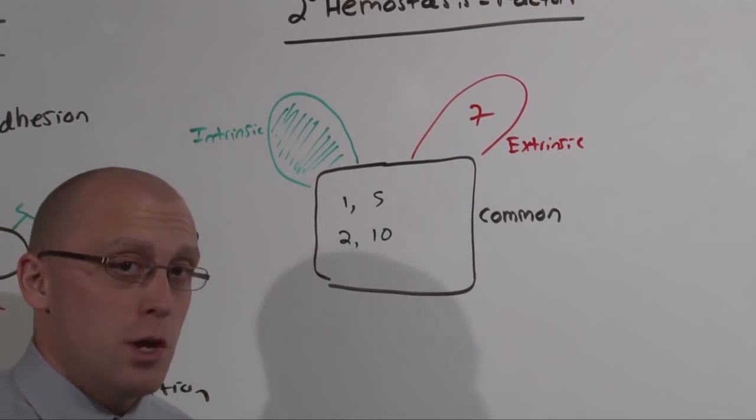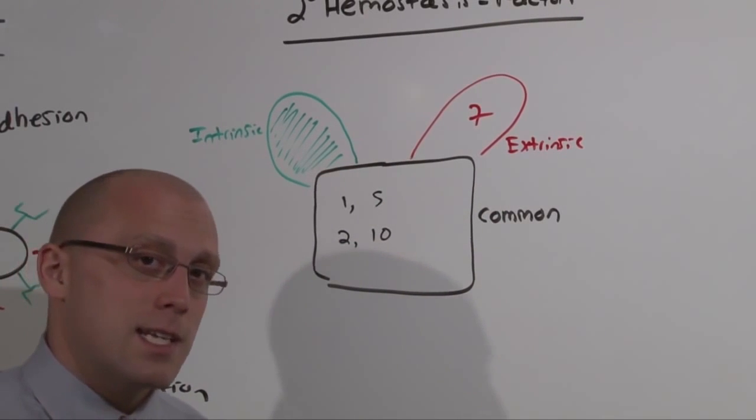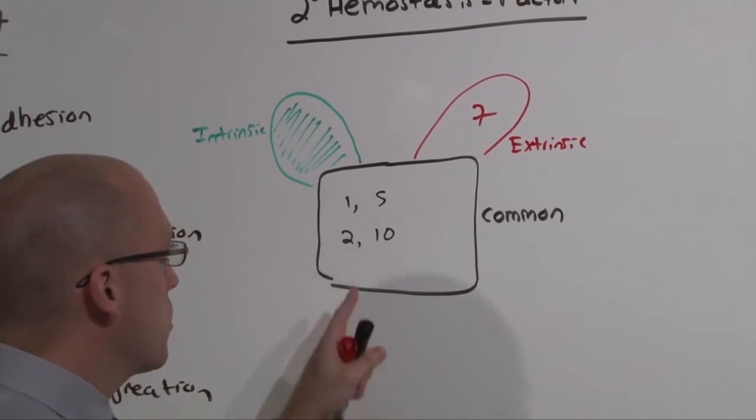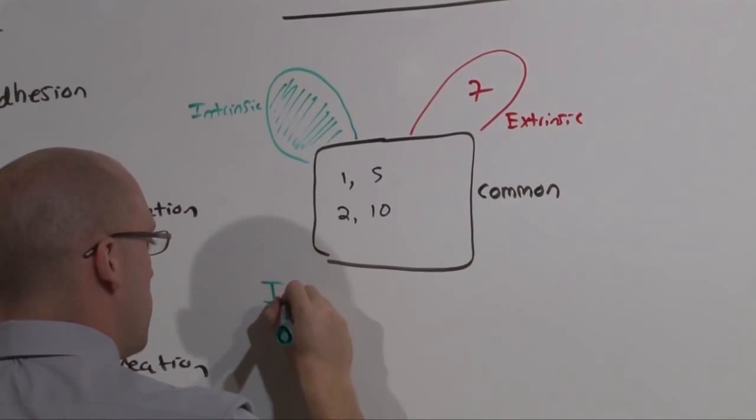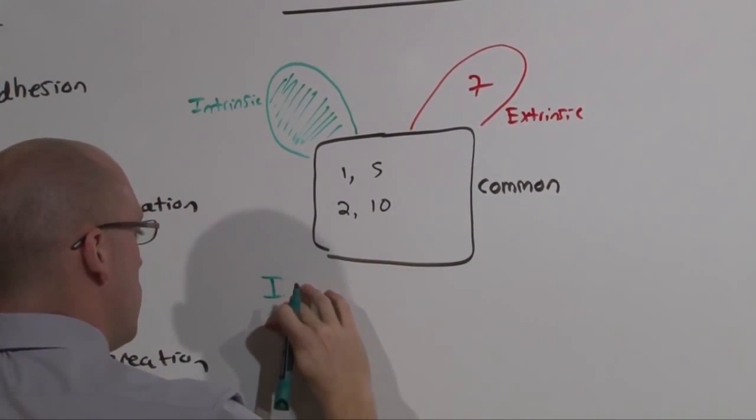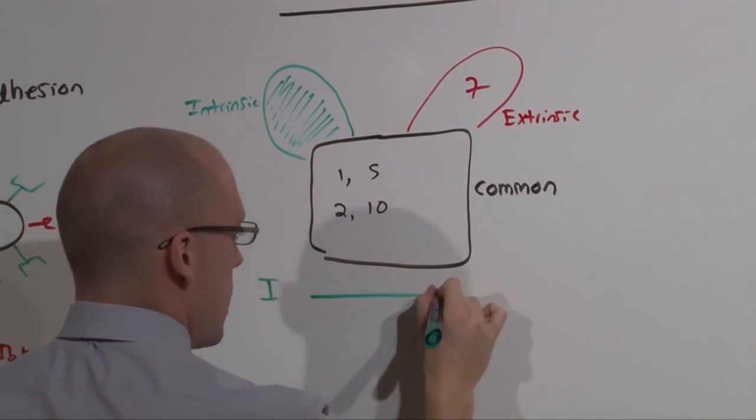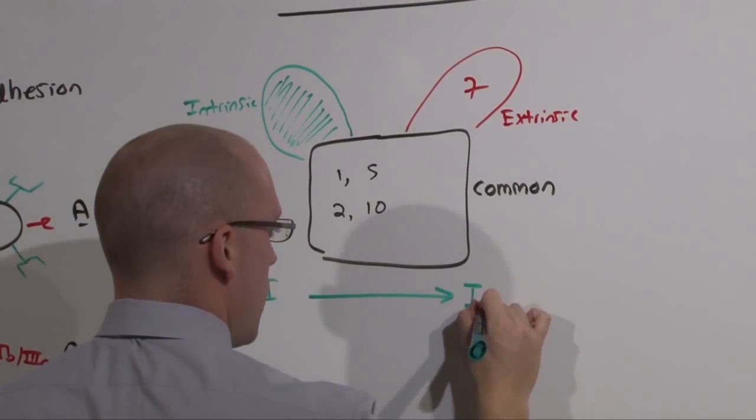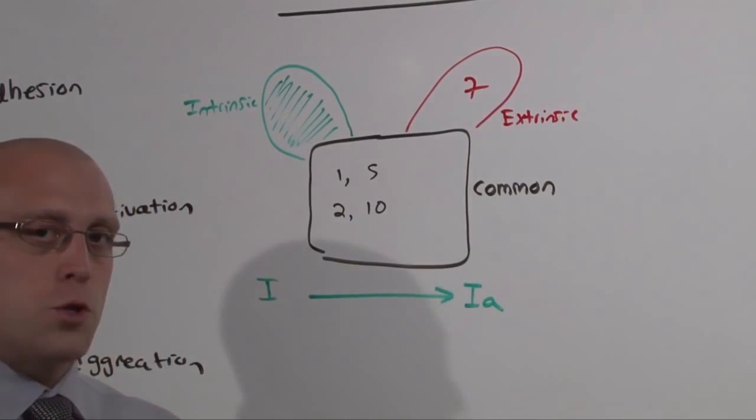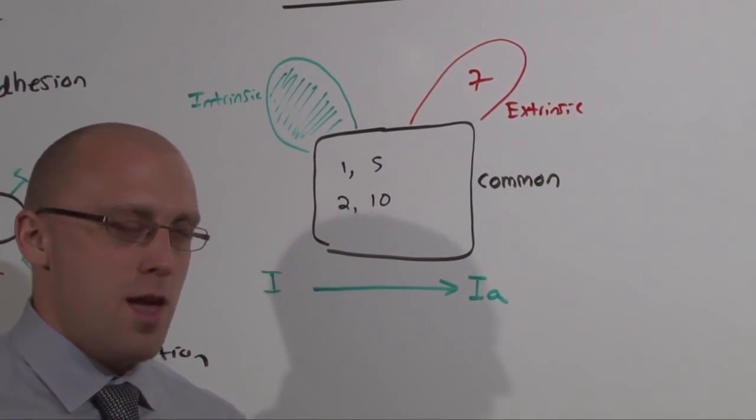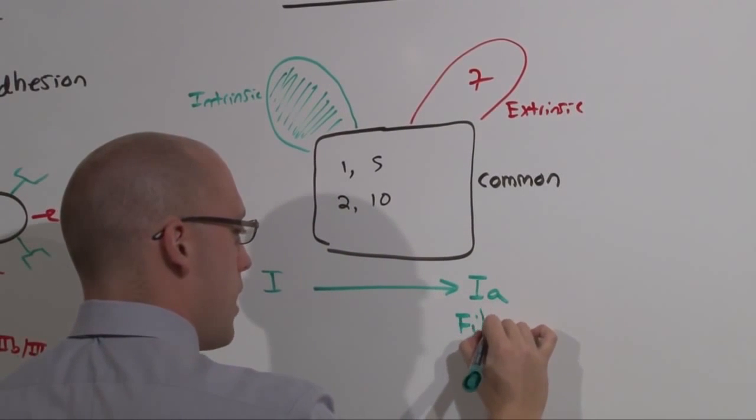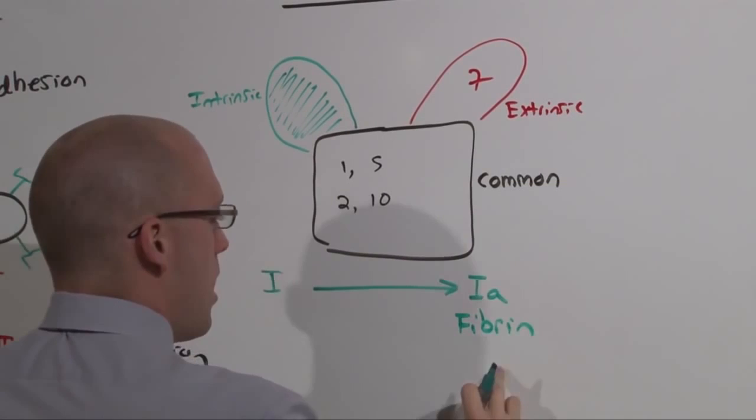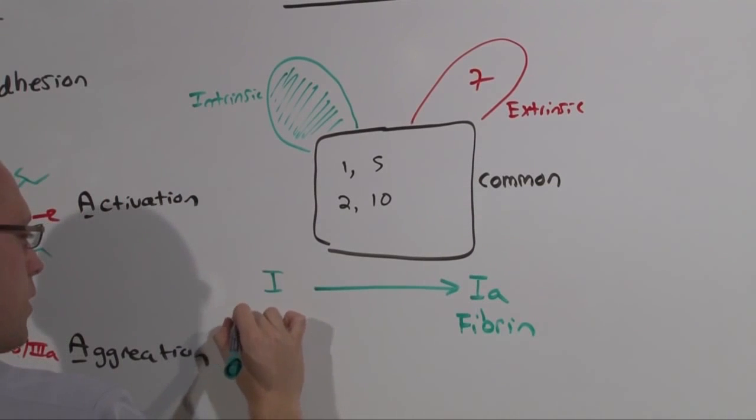That is all you really need to know about secondary hemostasis except that factor 1 is the last step in the creation of a clot. Factor 1 goes to its activated form 1A. But you probably know this by a different name. 1A is actually fibrin, and 1 is fibrinogen.